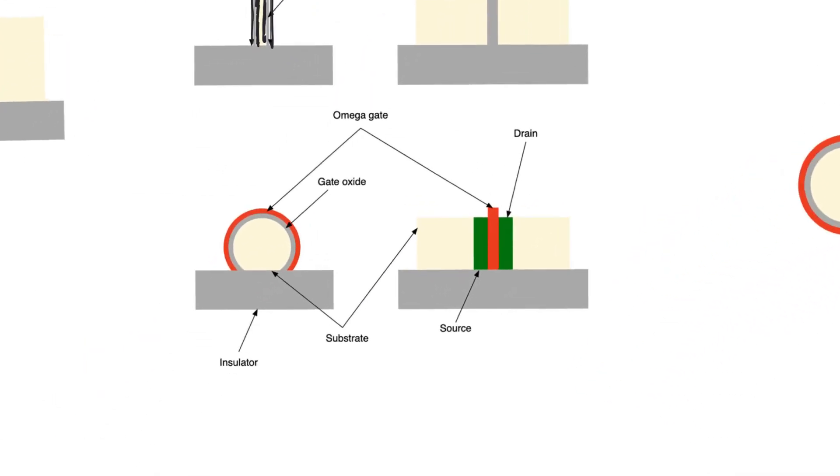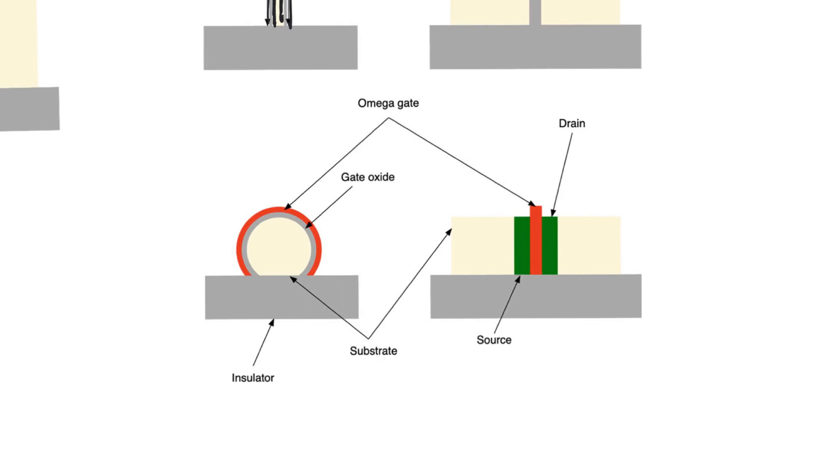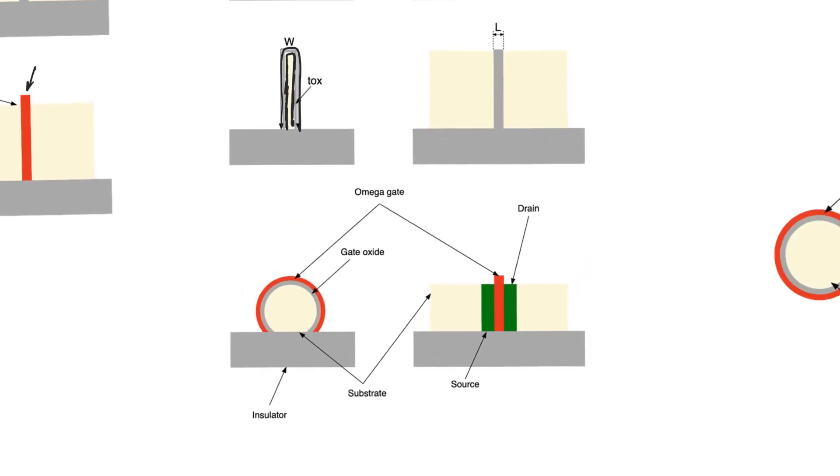There are alternative approaches which improve this. For example this is the omega transistor, the omega fin transistor, in which the cross section of the fin is not a thin fin as it was at the top but rather sort of an omega shape. And so the advantage again here is that the gate is surrounding a lot more of the channel and the drain has less proportionately less area through which it can couple to the channel.